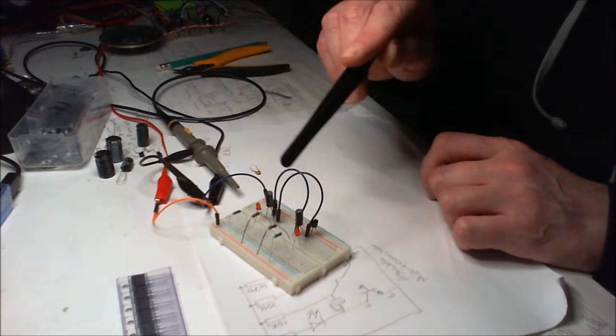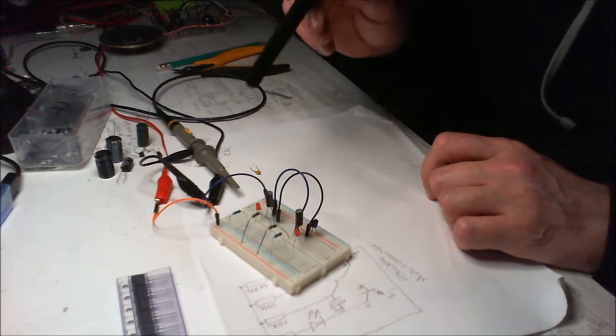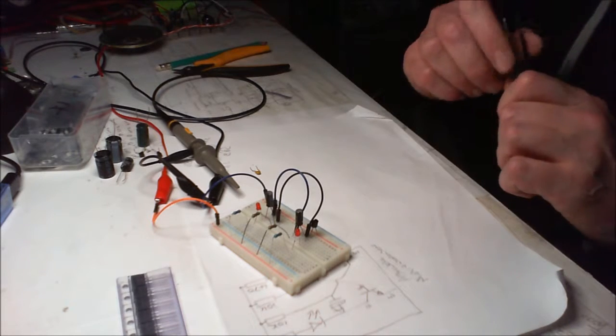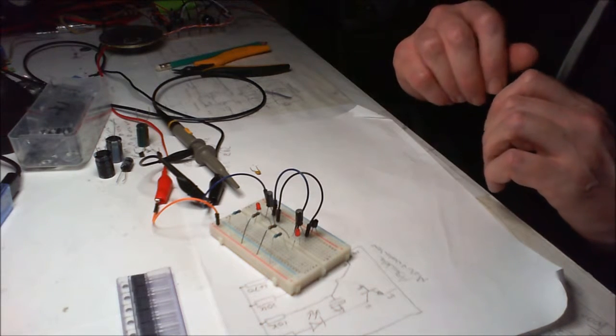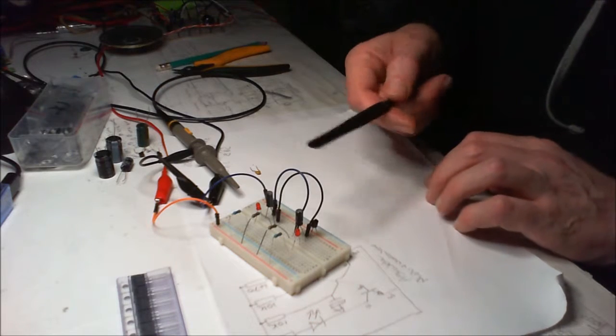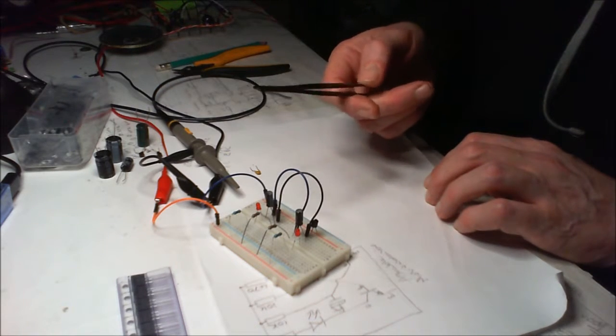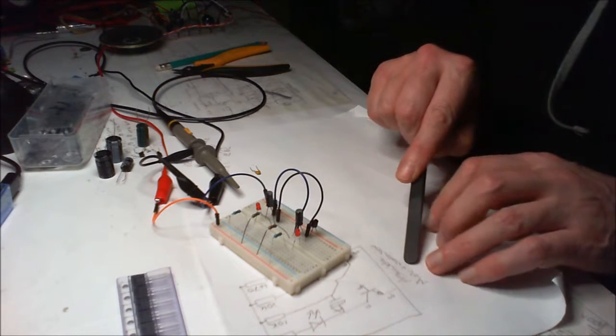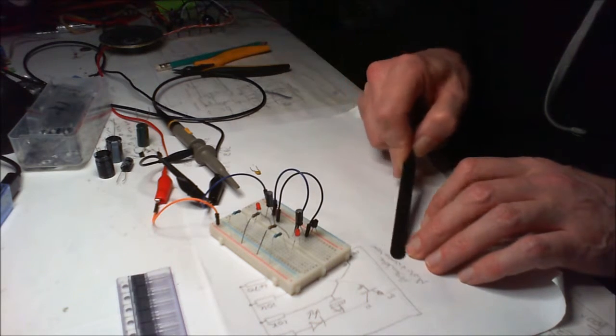It's called an astable multivibrator circuit. Astable because it keeps going. Multivibrator - you break it down: multi means many, vibrator means vibration, oscillation, movement.